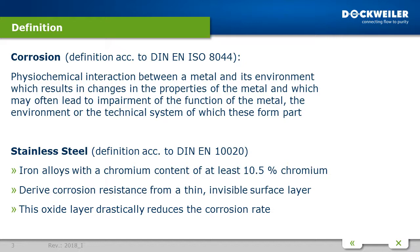An important definition is that of stainless steel. Stainless steels are iron alloys with at least 11% chromium content, and they derive their corrosion resistance from a thin invisible surface layer which forms spontaneously with the chromium atoms near the surface and oxygen present in the environment. This layer is called the passive layer and drastically reduces the corrosion rate. However, some environments cause permanent breakdown of the passive layer, and where it cannot rebuild, corrosion occurs on the unprotected surface.